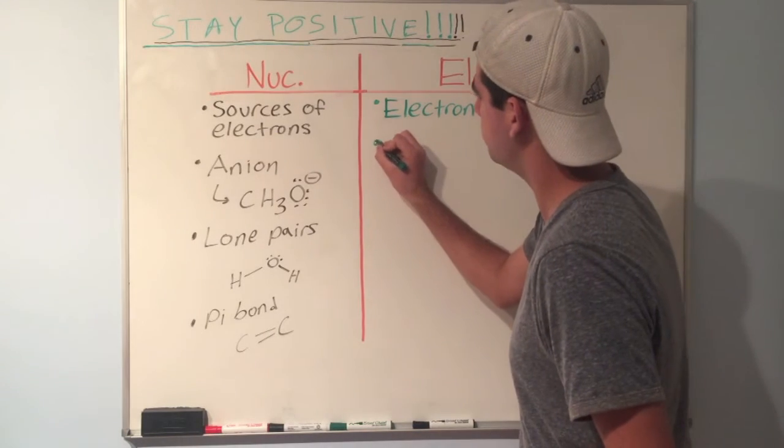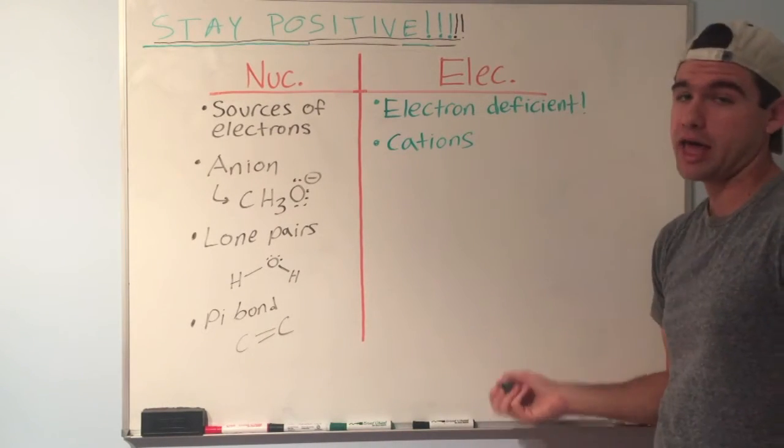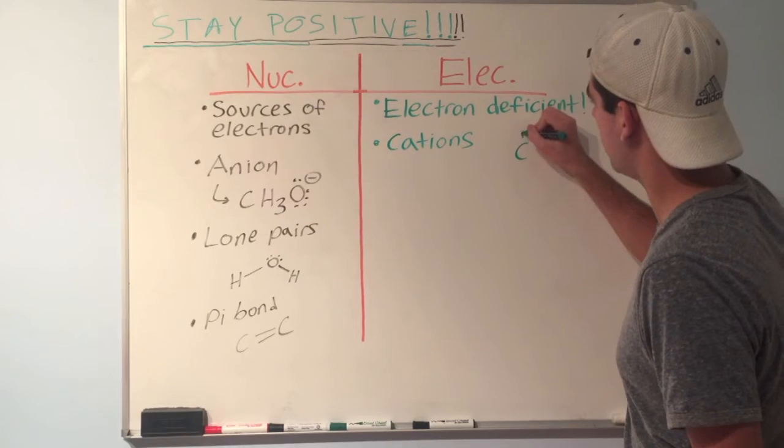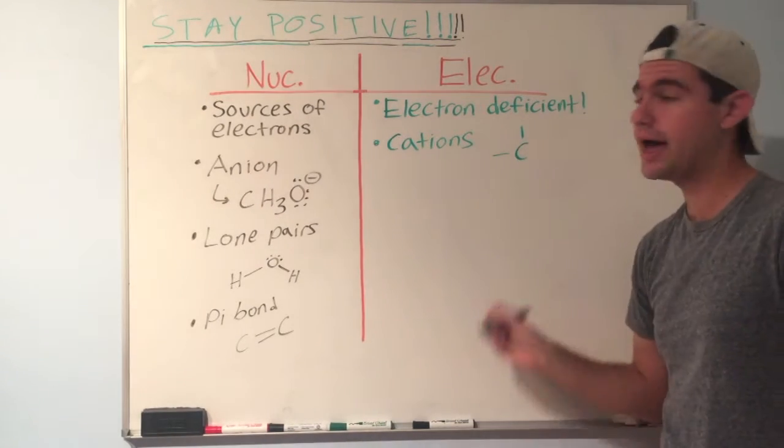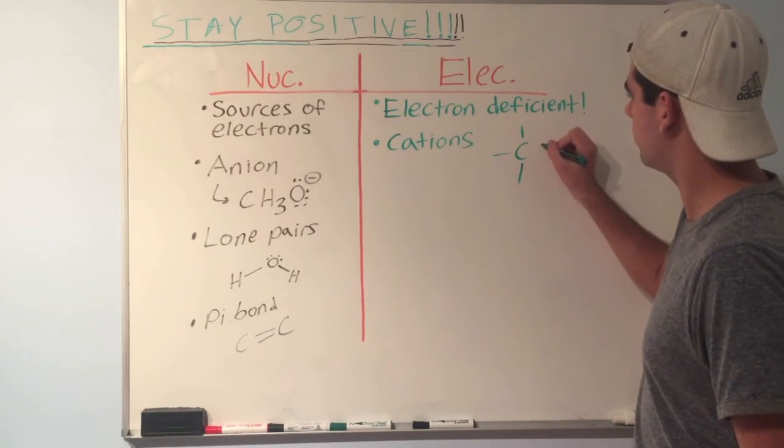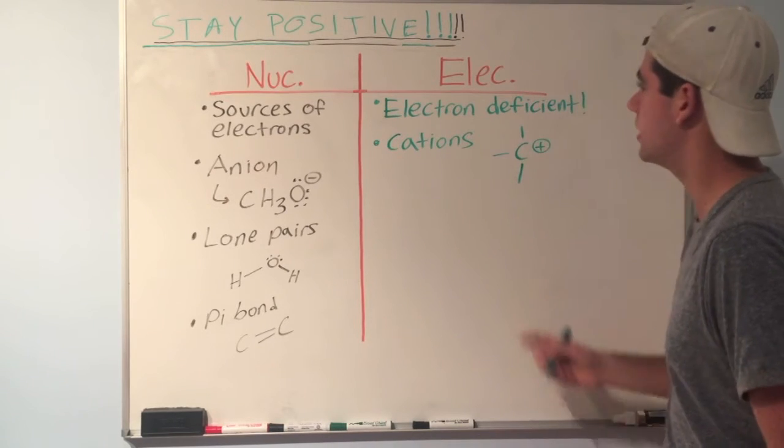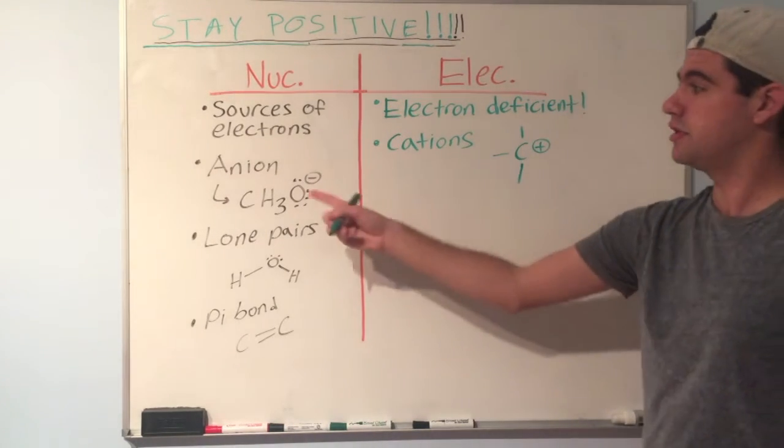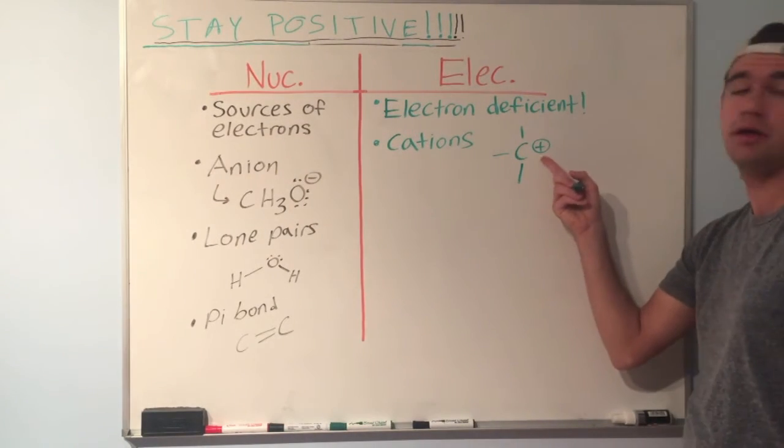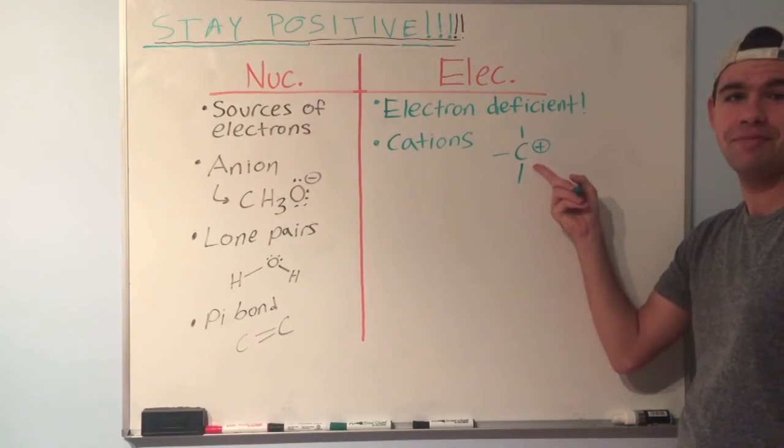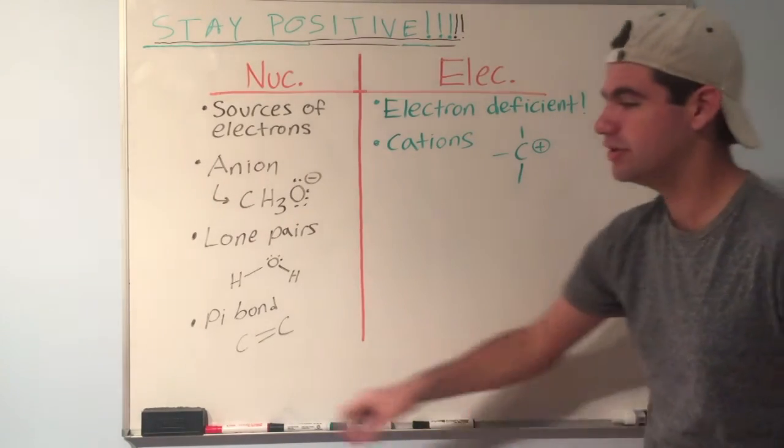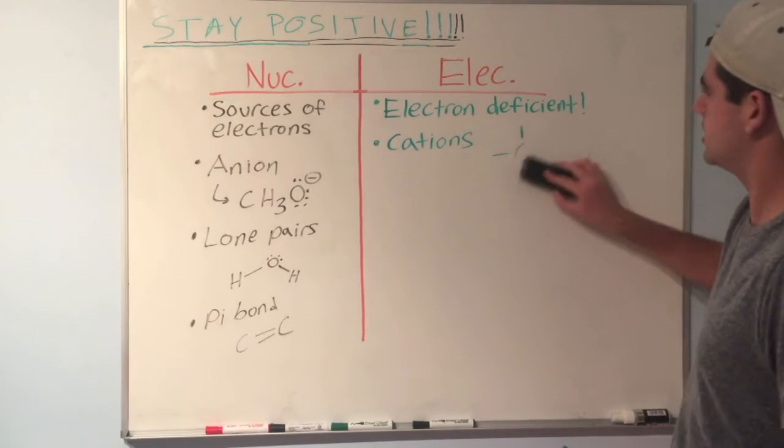We said already positive charges. So cations. So we can think of a carbocation as one example. We're going to go into those when we learn SN1 reactions. But essentially, it's a carbon with a full positive charge. You can totally see how a source of electrons, a negative charge, would definitely be hungry for this type of species. A negative and a positive attract.